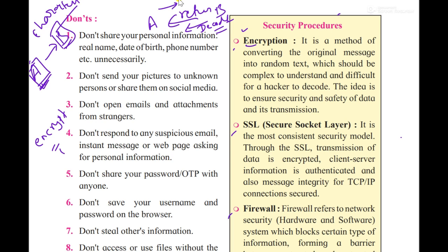We will decode data back to its original format. The plain text was used in cipher text, and then you will convert it back to plain text or original text — that is decryption. Encryption and decryption are used to make it difficult for a hacker to decode data — this all comes under data safety.